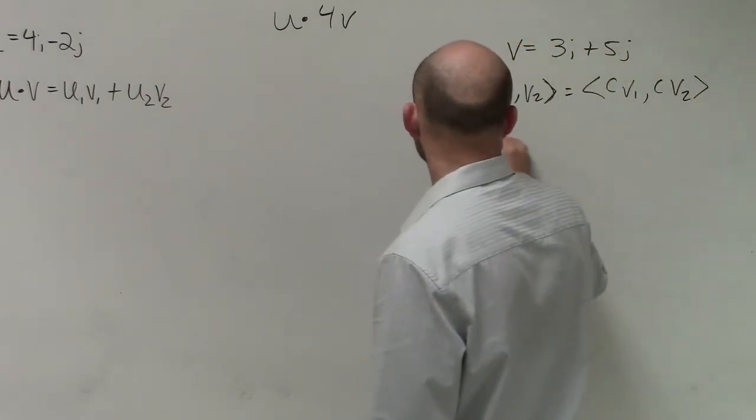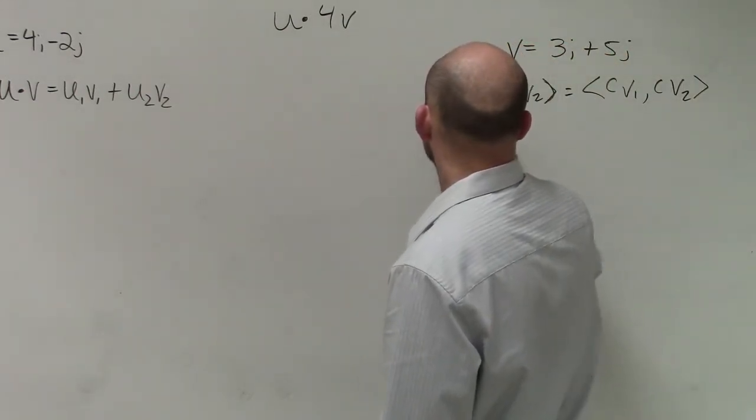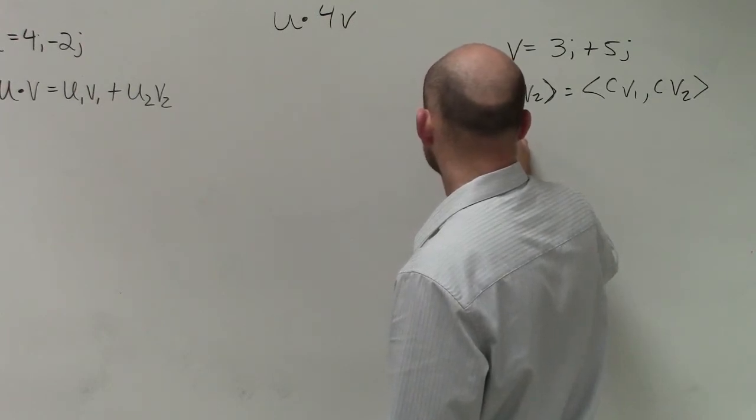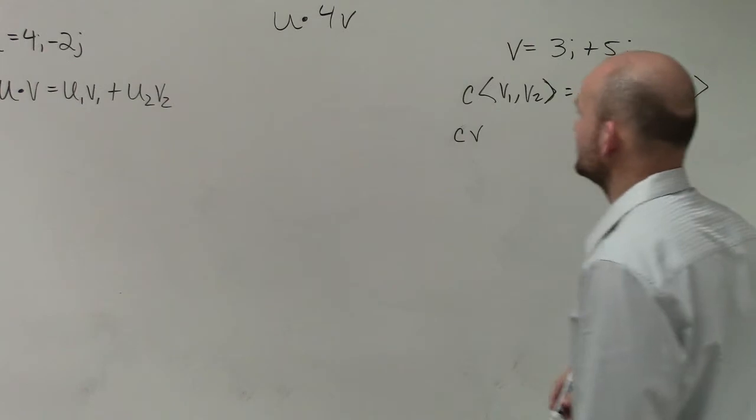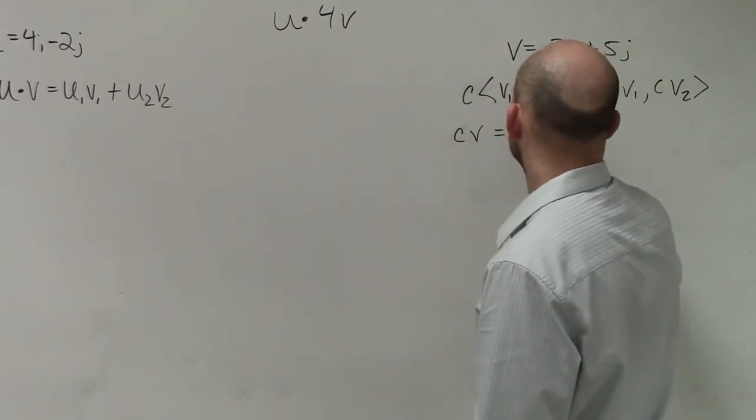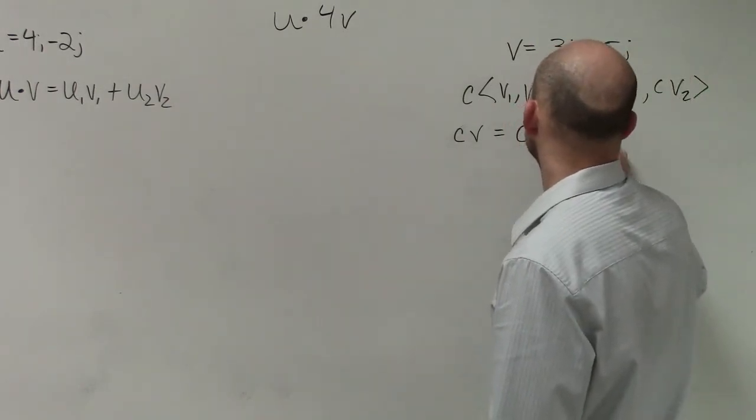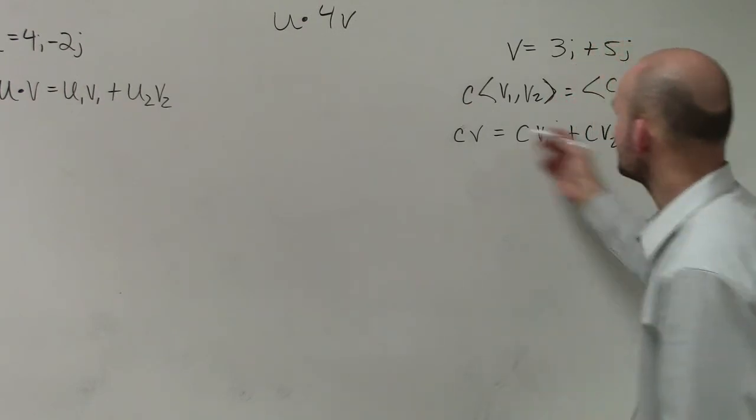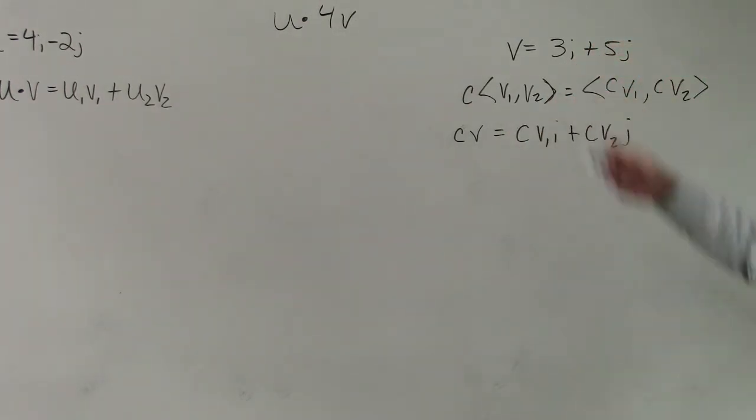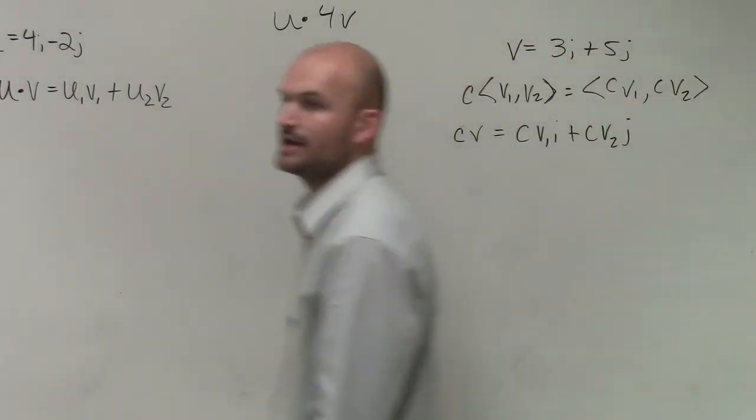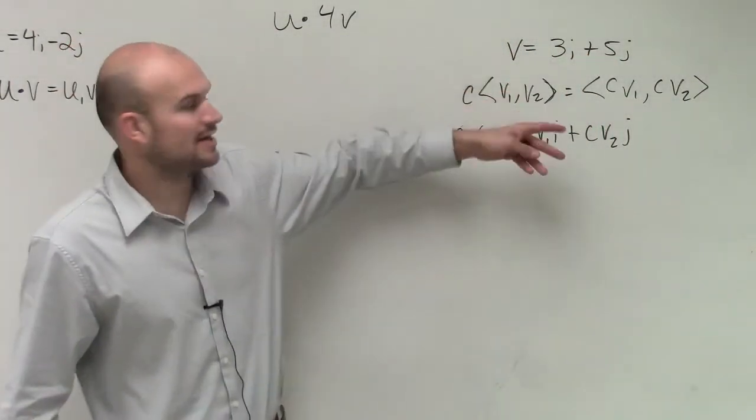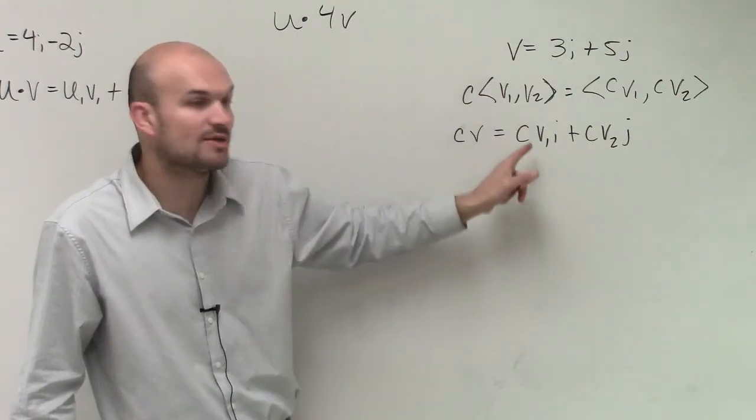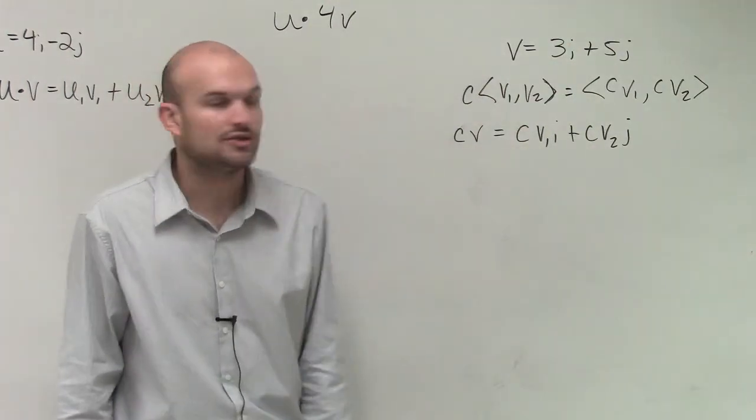But it doesn't matter if my vector is a linear combination or if it's in component form. It doesn't matter how I want to write my vector. If I do c times v, you just multiply your c times both of your unit vectors.